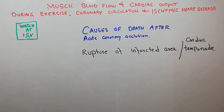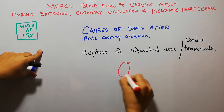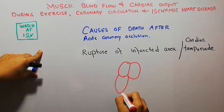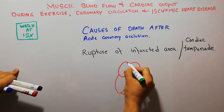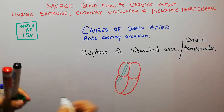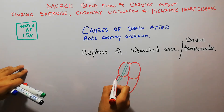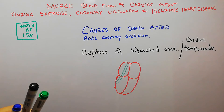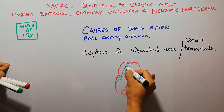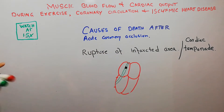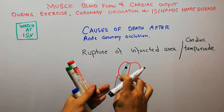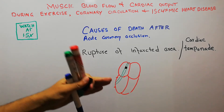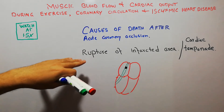How does rupture of the infarcted area occur? As soon as the ventricular walls get damaged — for example, this portion of the heart muscles is supplied by this coronary artery — if we get an occlusion here, this artery is blocked and we label it as acute coronary occlusion. Cardiogenic shock, ventricular fibrillation, and acute pulmonary edema can all occur because the heart and ventricular walls have been damaged. One important complication is rupture of this area.